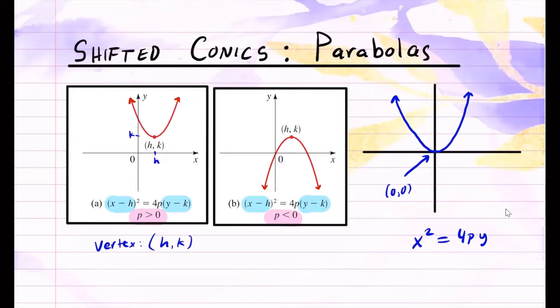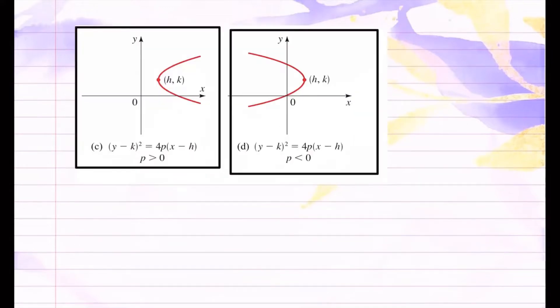So I'll show you how to work with an example for shifted parabolas. Now we can also have our parabola opens on the sideways either to the right or to the left. So just like the ones I have here. So before, again, if you were to relate this to what you saw earlier, you could have a parabola that looks like this. So the vertex is right here, 0 comma 0.